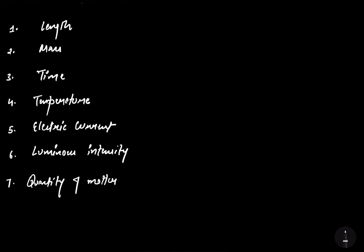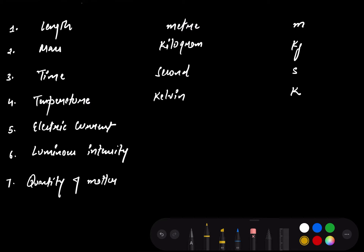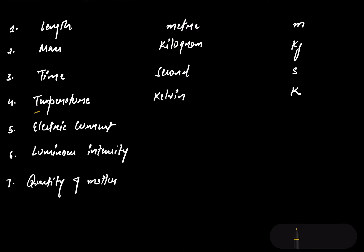Their units are as follows. For length, the unit is meter, denoted as small m. For mass, we have kilogram, represented as kg. For time, the unit is second, represented as s. For temperature, the unit is Kelvin. In chemistry, whenever you have a numerical based on temperature, you will take its unit always in Kelvin.